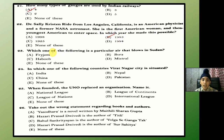Which one of the following is a particular wind that blows in Sudan? The answer is C — Haboob.